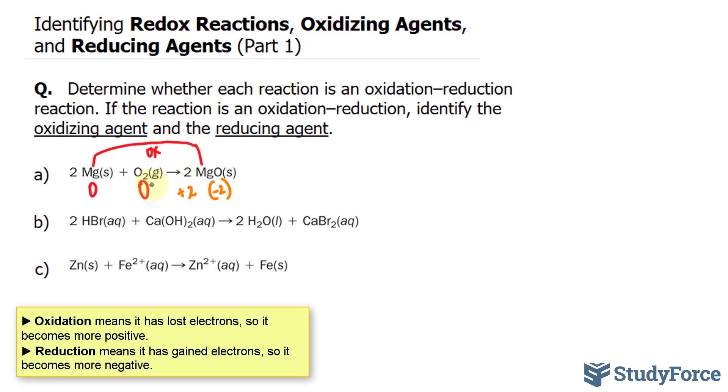Take a look at oxygen. It starts at zero and ends up at minus two. Because oxygen has become more negative, it has gained electrons. Therefore, it has been reduced.